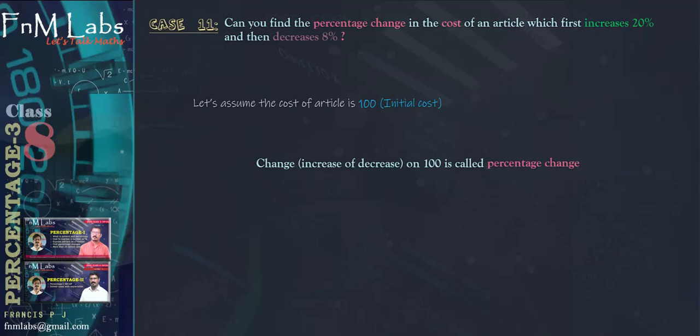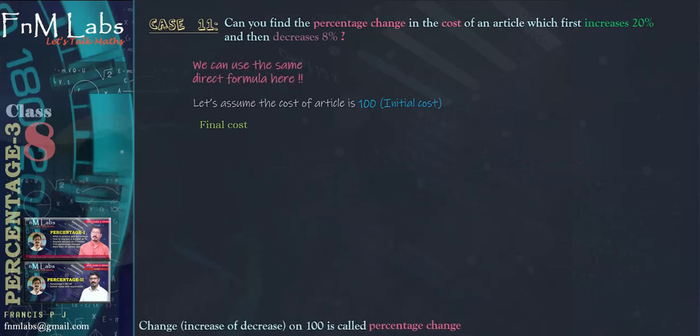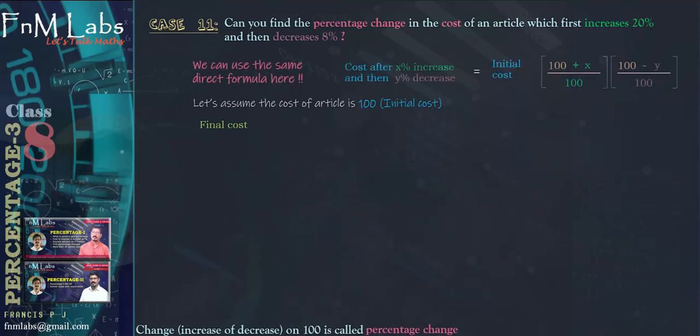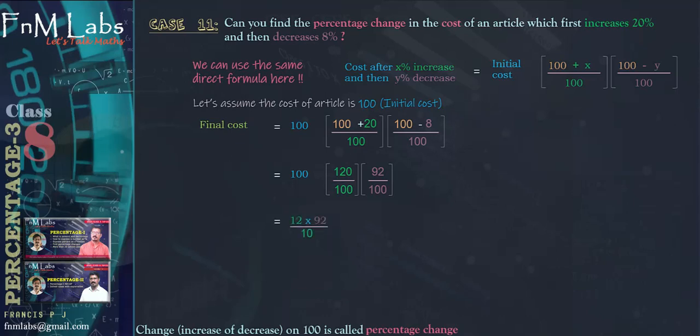The initial cost is 100 and we need to find the final cost. We use the direct formula: cost after x percent increase and then y percent decrease is equal to initial cost into (100 + x)/100 into (100 - y)/100. Here x is added because it is an increase and y is deducted because it is a decrease. So final cost = 100 × (120/100) × (92/100) = 12 × 92/10 = 110.4.